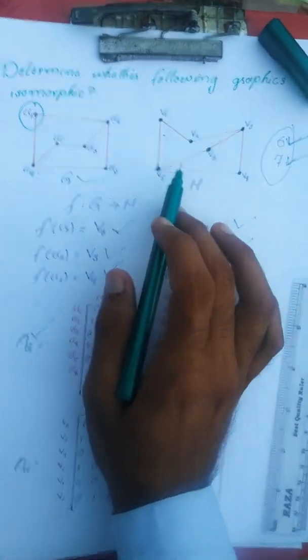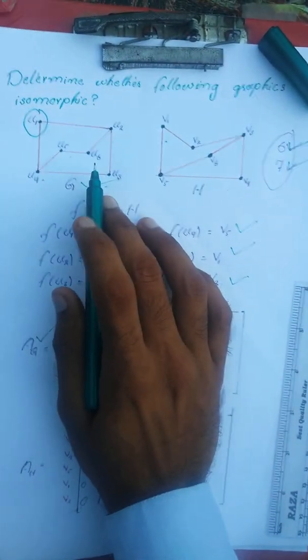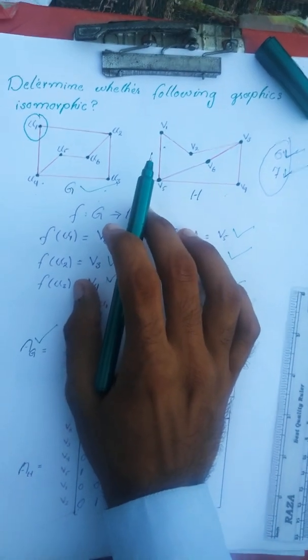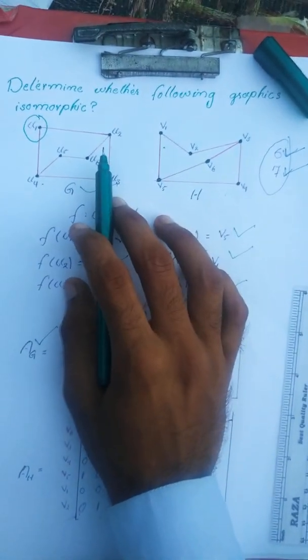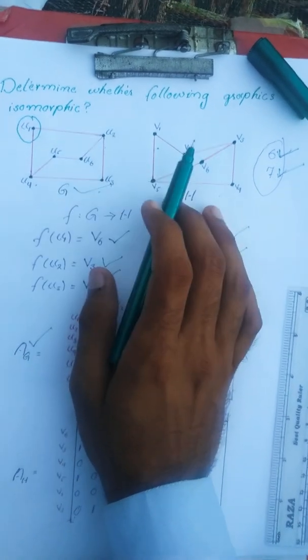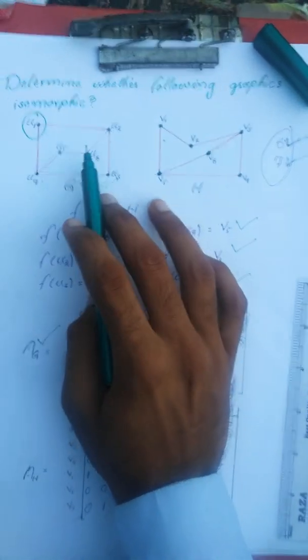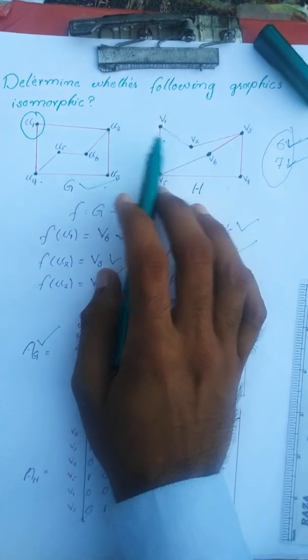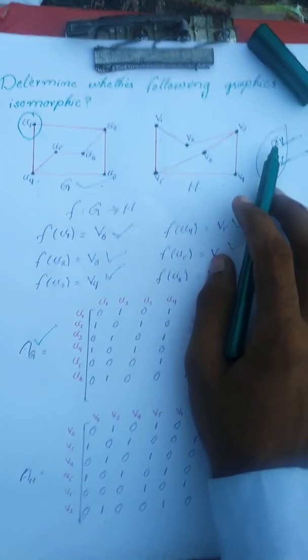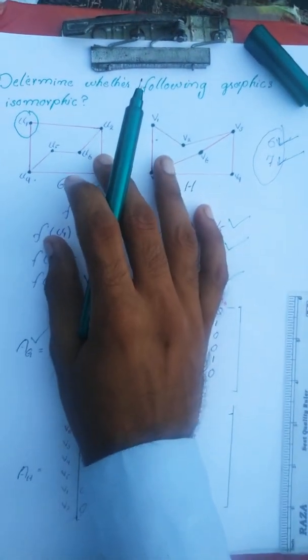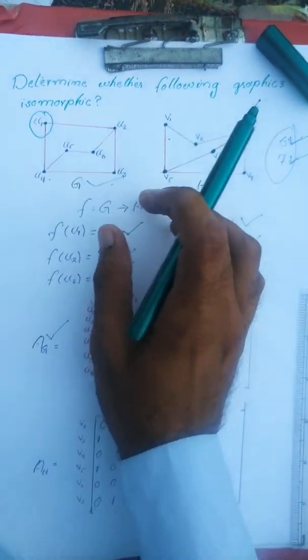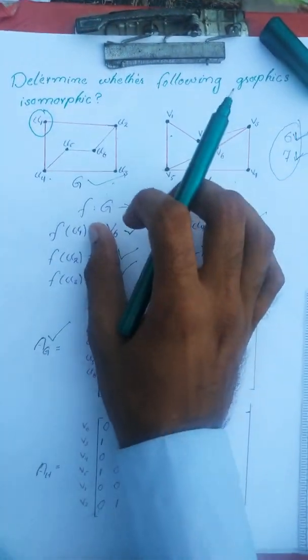We are given two graphs, graph G and graph H. We need to determine whether these two graphs are isomorphic or not. When we see these two graphs, we see that the number of vertices in these two graphs are equal and the number of edges are also equal. The number of vertices are 6 and the number of edges are 7 in both these graphs. So it is reasonable to move forward and check the isomorphism on these two graphs.